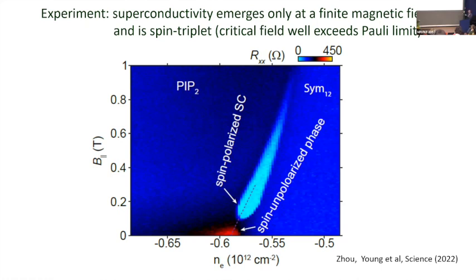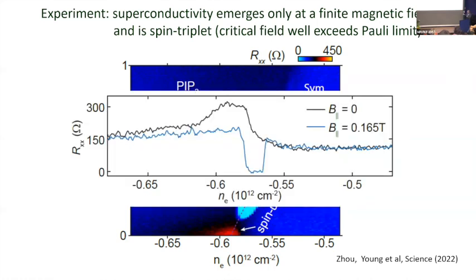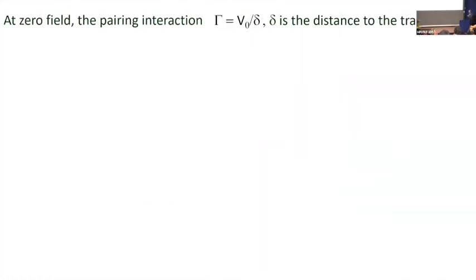Looking at experiment, there are interesting features. This is the same data shown before but in different colors. The vertical axis is the in-plane magnetic field — that's the Zeeman field with no orbital effect. You see that superconductivity does emerge, but it emerges only at a finite field. At small fields there is nothing. The critical temperature for superconductivity rises with field, reaches a maximum, and then disappears at high field.